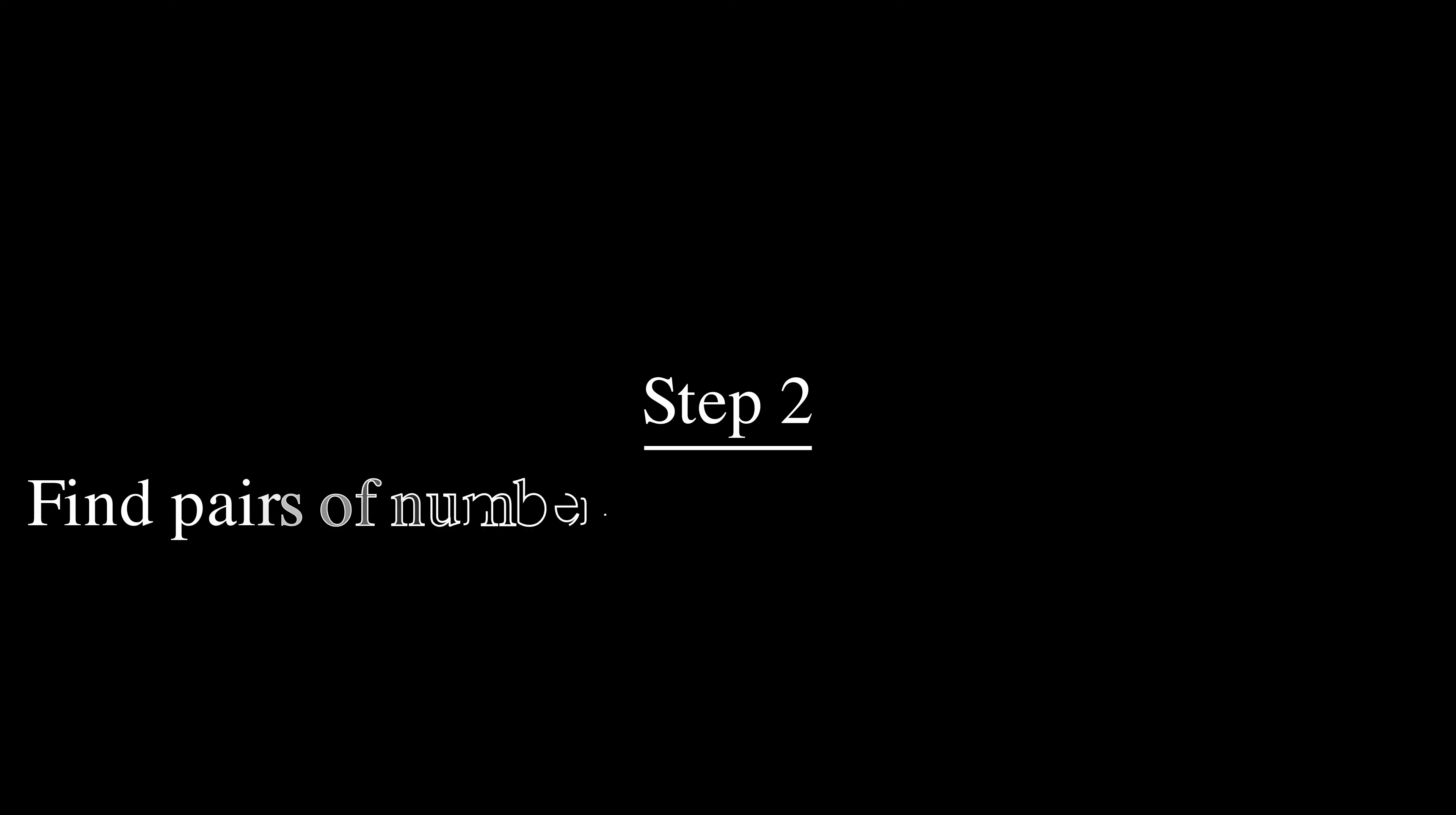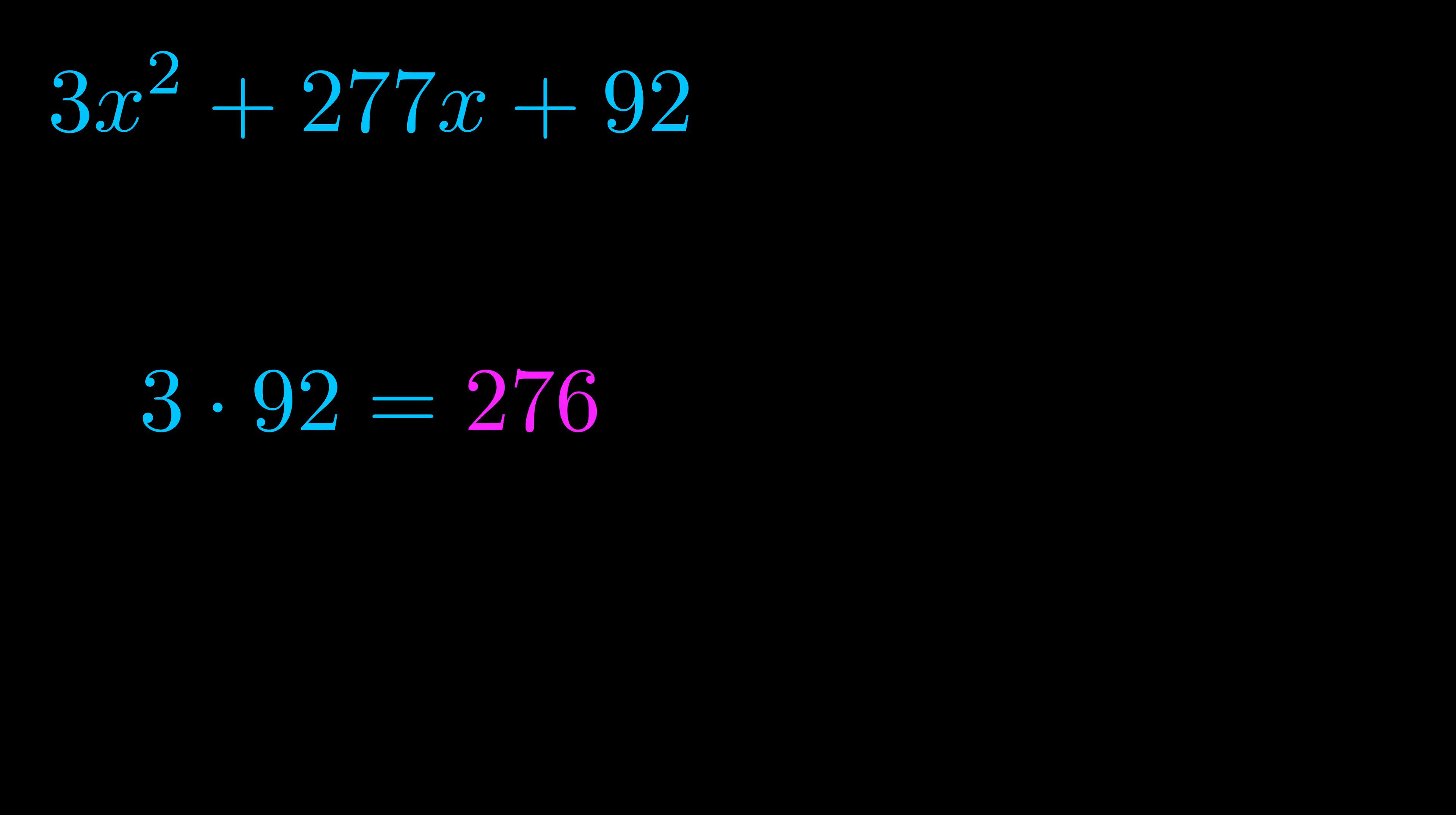Step two is to try to find all of the pairs which multiply to this number. Now it turns out you don't really need to find all of them but go ahead and write down as many numbers as you can that multiply to the magenta value for now. Pause the video and resume when you're ready to continue.